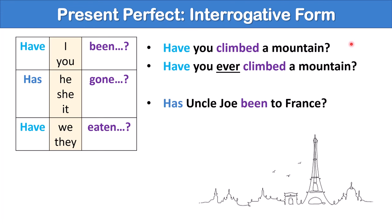Another example. Has Uncle Joe been to France? Has Uncle Joe ever been to France? Essentially, these mean the same thing. Remember to place never or ever just before the past participle.